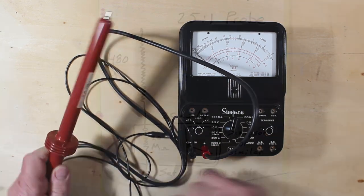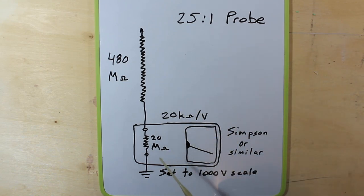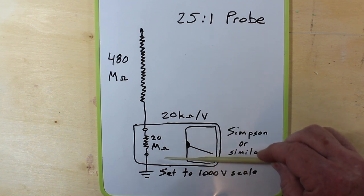So here's the situation with our high voltage probe when it's used with the Simpson meter. The Simpson meter being 20,000 ohms per volt on the 1,000 volt scale, that makes it a 20 mega ohm meter.